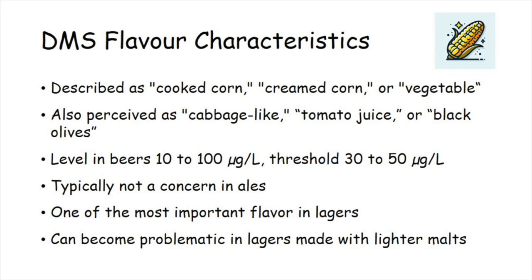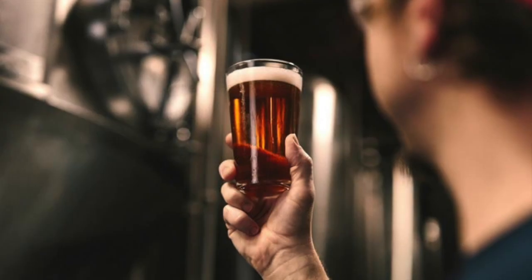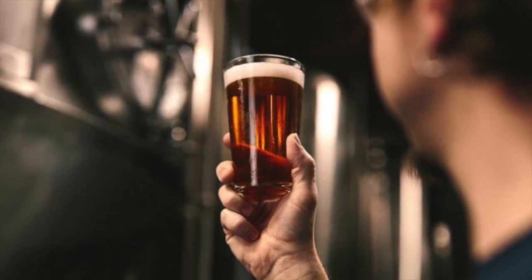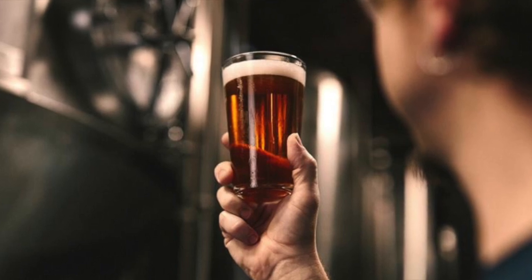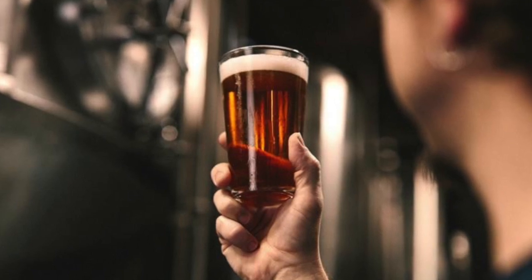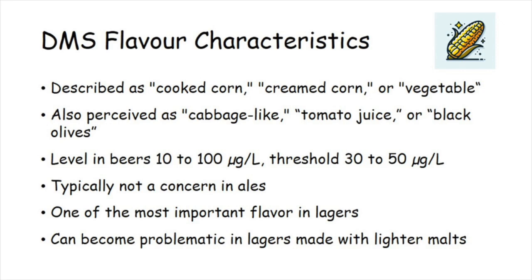DMS has a distinct flavor profile often described as having a cooked corn, green corn, or vegetable aroma and taste. Some people also perceive it as cabbage-like, tomato juice, or black olives. DMS is typically present in most beers at concentrations between 10 to 100 micrograms per liter. The flavor threshold varies by beer style but generally falls between 30 and 50 micrograms per liter. It is typically not a concern in ales. At low levels, DMS can enhance the flavor of some pale lagers and is one of the most important flavor characteristics of the style.